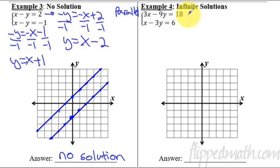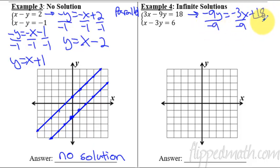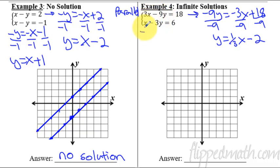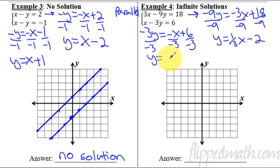Infinite solutions. Okay, so let's rewrite this equation. I'll subtract three x from both sides. That leaves me with negative nine y — don't forget that negative is attached there — negative nine y equals negative three x plus eighteen. Now I divide everything by negative nine. That leaves me with y equals one third x minus two. What about this one? If I subtract x from both sides, we'll get negative three y equals negative x plus six. Divide everything by the coefficient of y there, and we have y equals one third x minus two. Look at that — they're exactly the same equations.